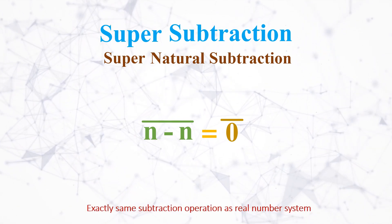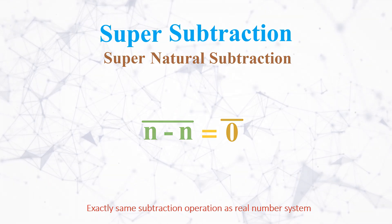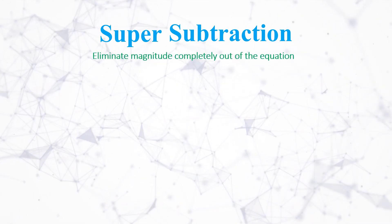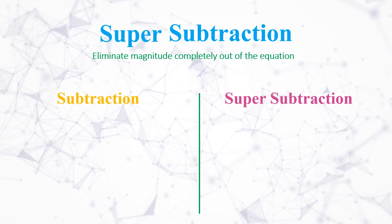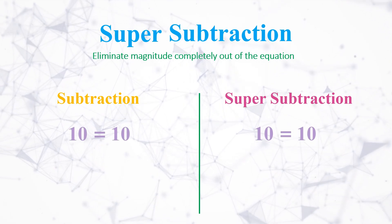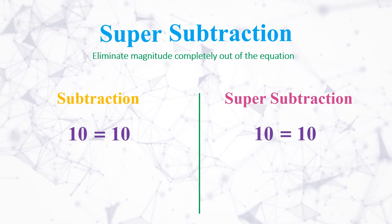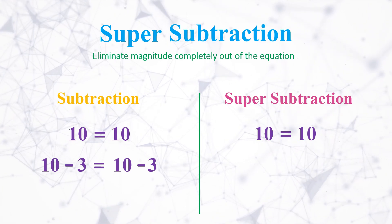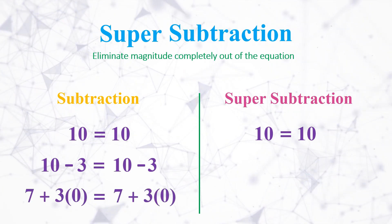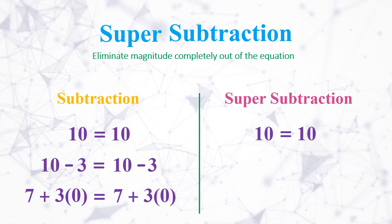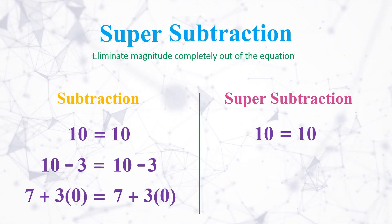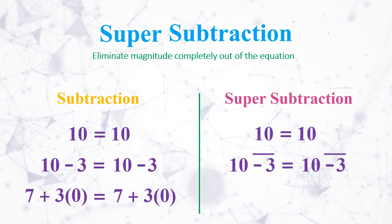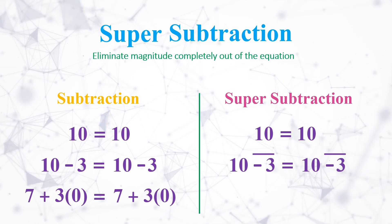Now coming to the first case, to eliminate the magnitude completely out of the equation. Let's consider the equation 10 equals 10. And if we add minus 3 on both sides of the equation, the solution will be 7 plus 3 times 0 equals 7 plus 3 times 0 if we do the subtraction.